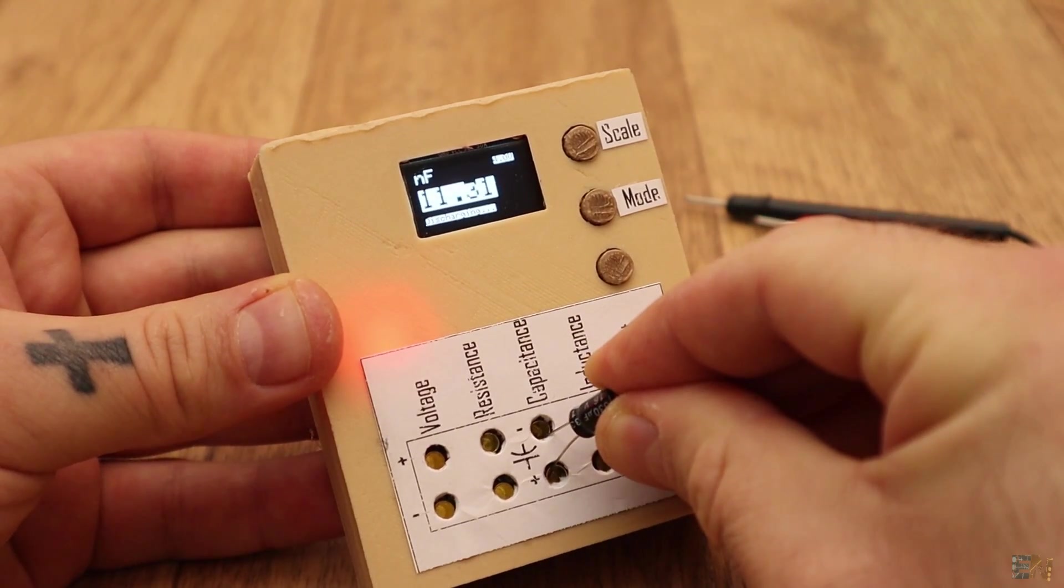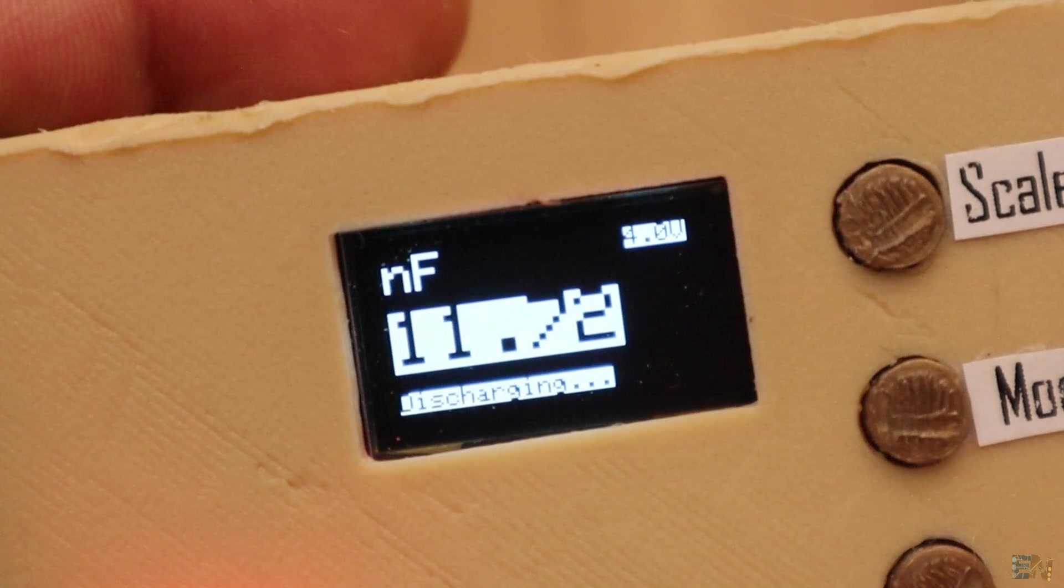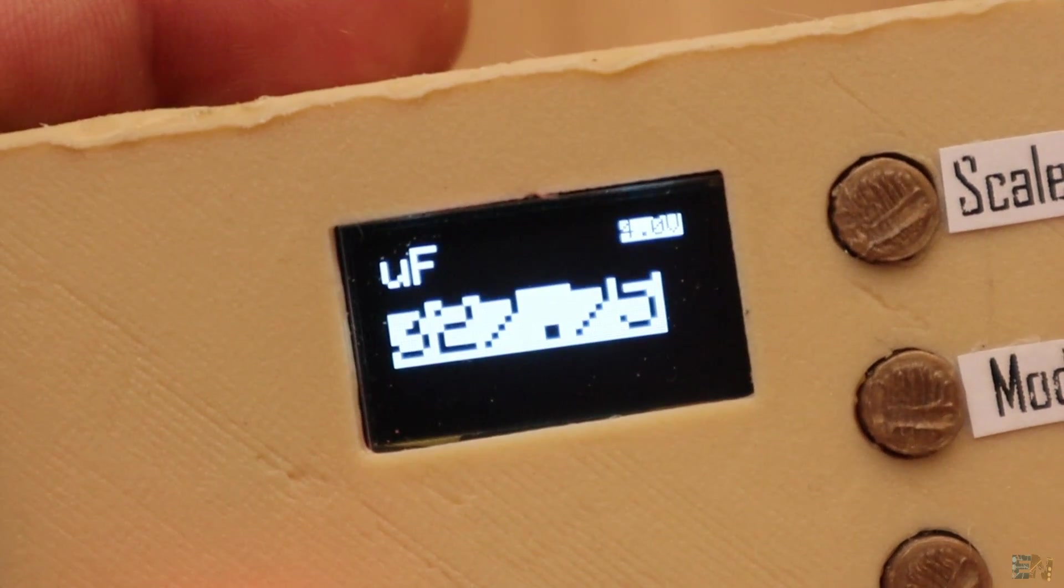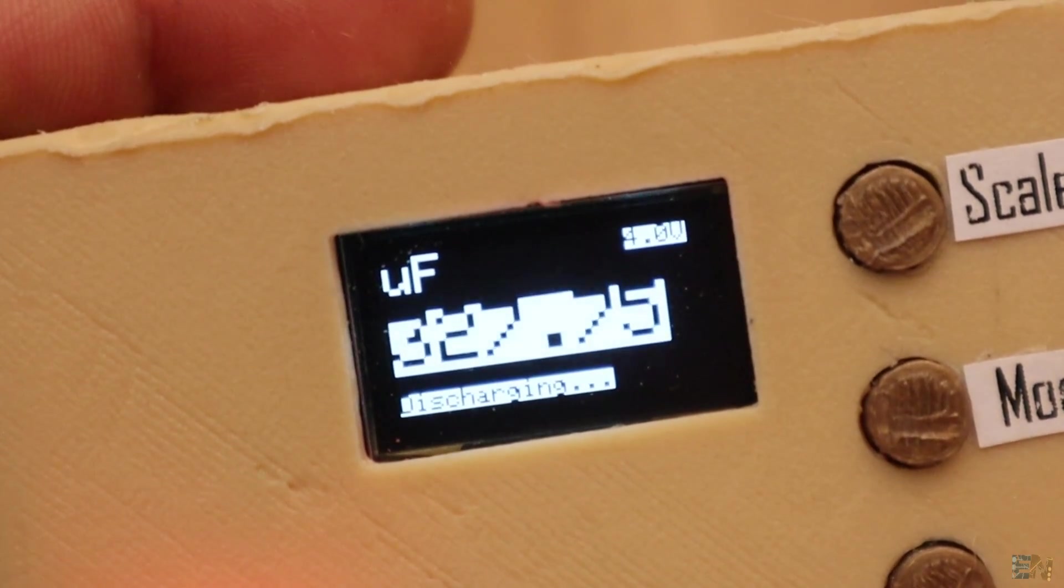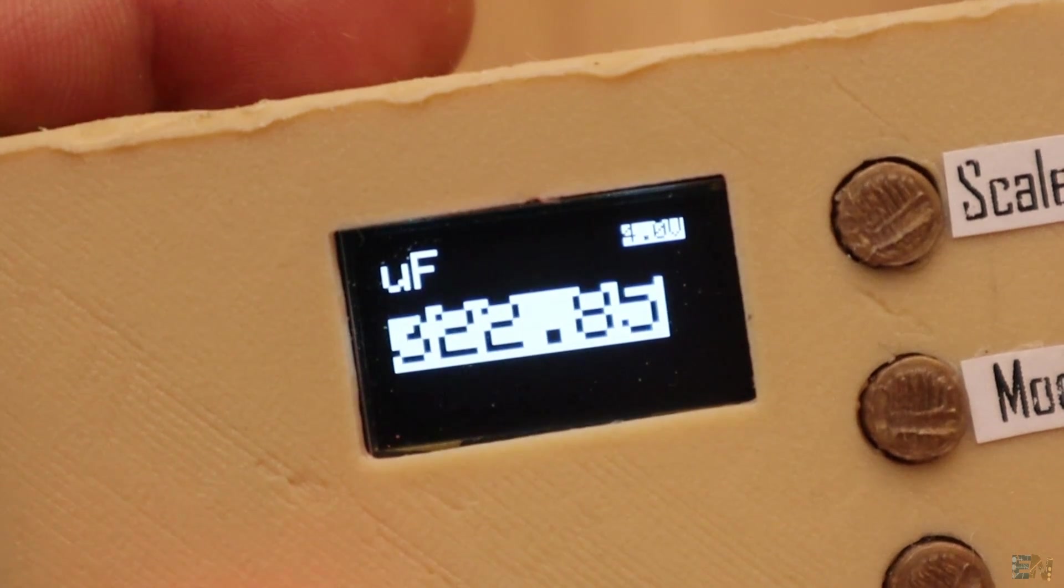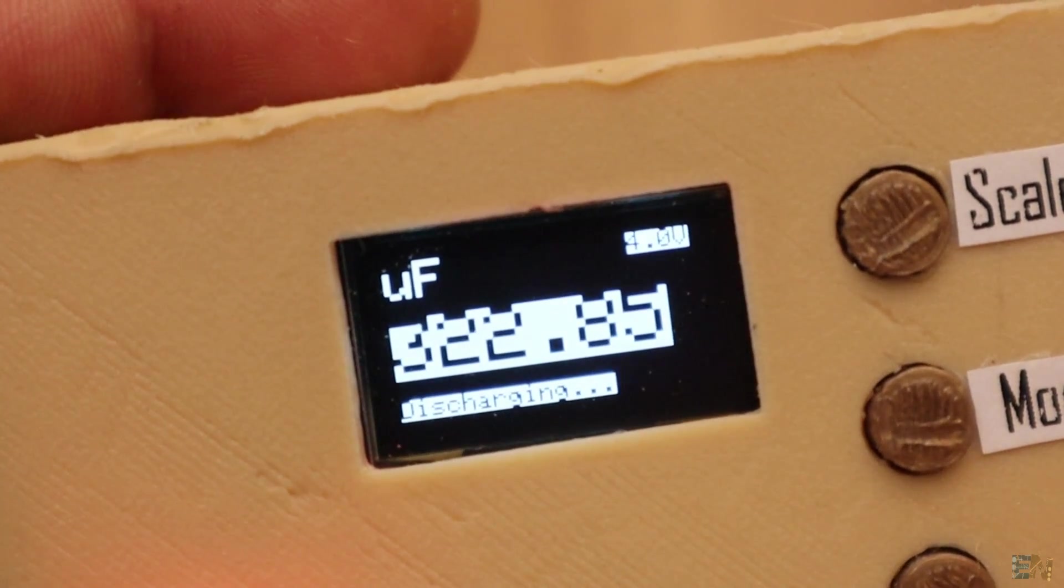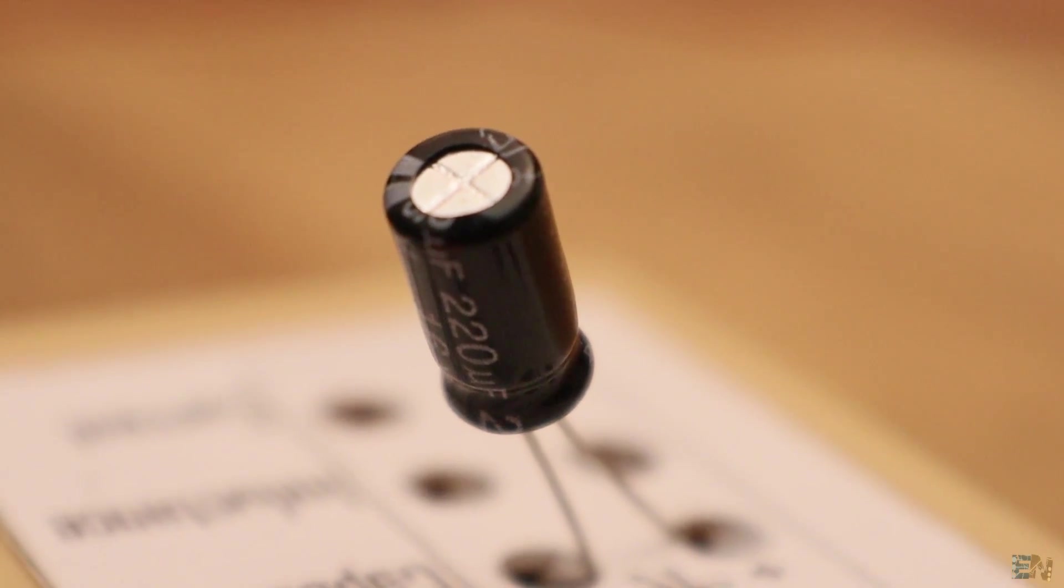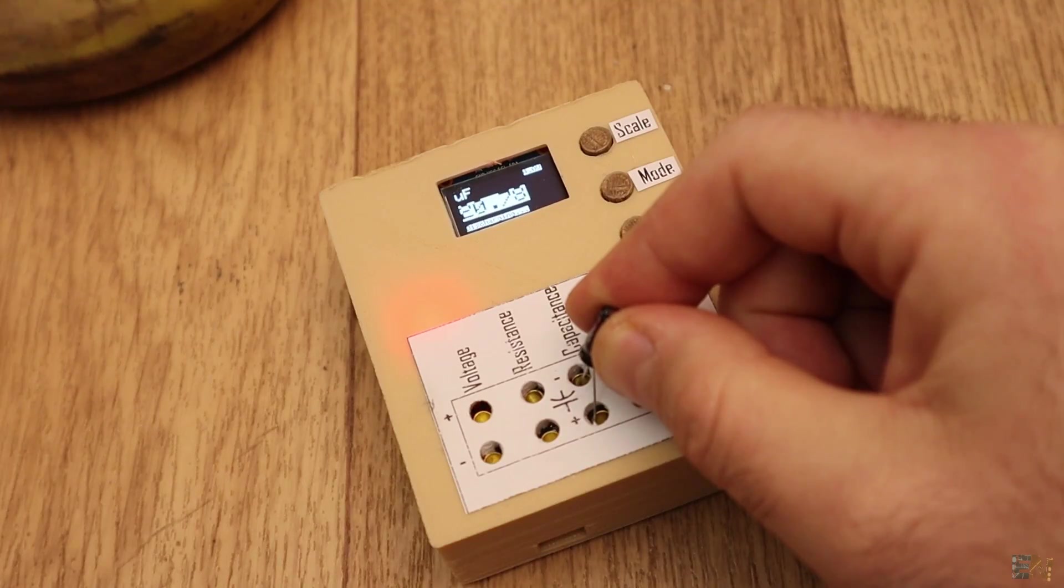As you can see, now for a bigger capacitor, it displays discharging and we only get the result when the capacitor voltage gets to 63% and we calculate the capacitance using the time constant formula. This is a 220uF capacitor and we get quite a good result.